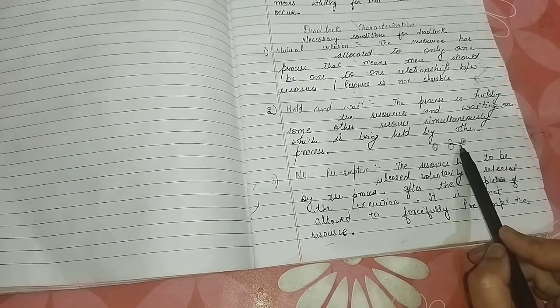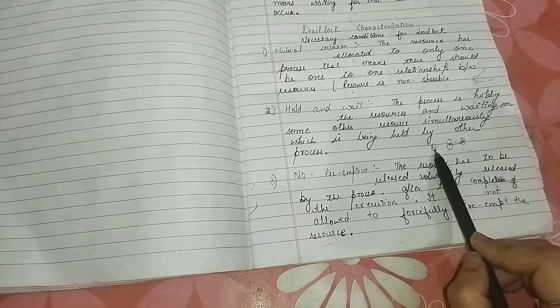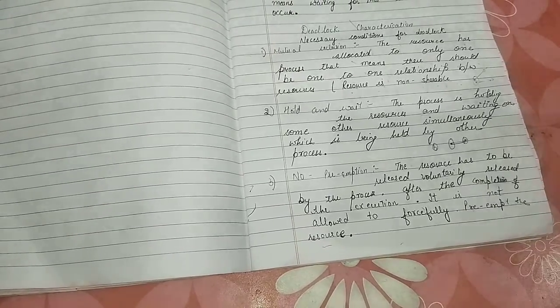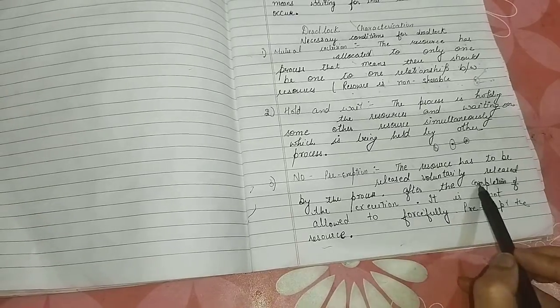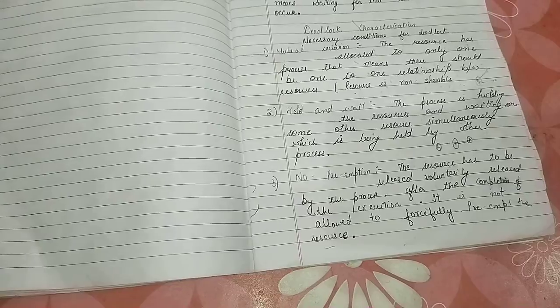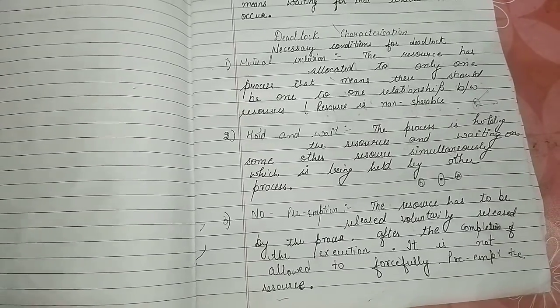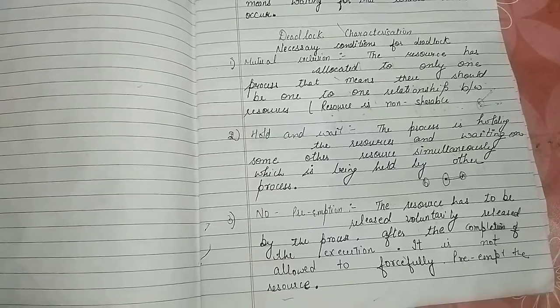The resource that A has taken, if A is voluntarily released, then B will take that resource. So this is after the completion of resources. This means that we cannot forcefully preempt that resource, forcefully cannot take that resource.